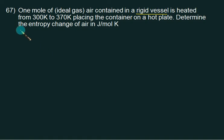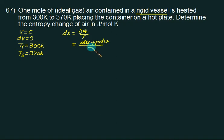Rigid vessel means constant volume. If the volume is constant then dV is 0 and you are given the initial temperature and final temperature. Initial temperature is 300 and final temperature is 370 and determine the entropy change in joules per mole per kelvin. dS equals del Q by T. Del Q by T is same as du plus pdV by T.